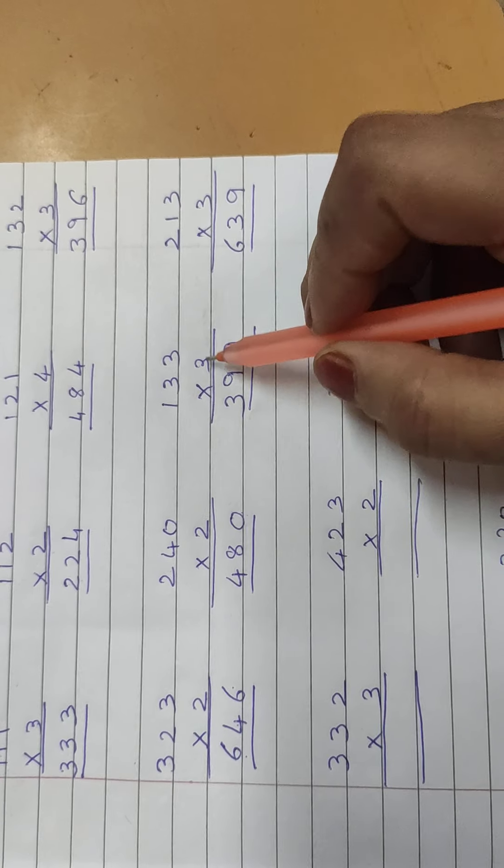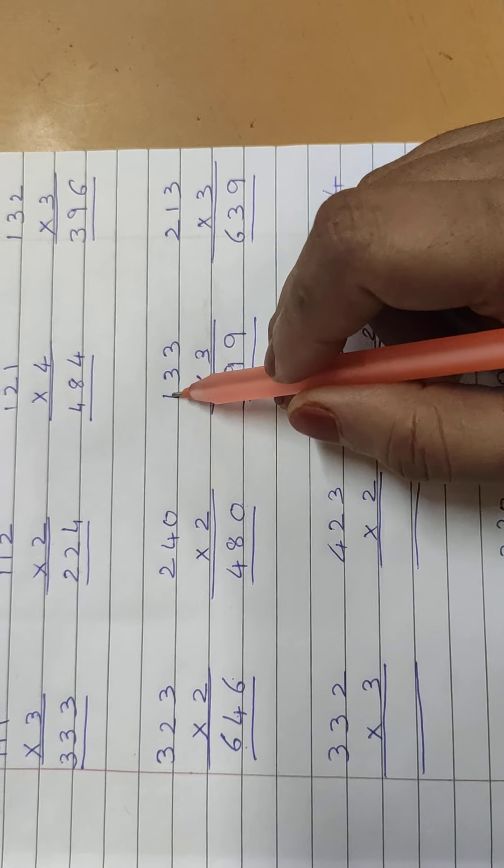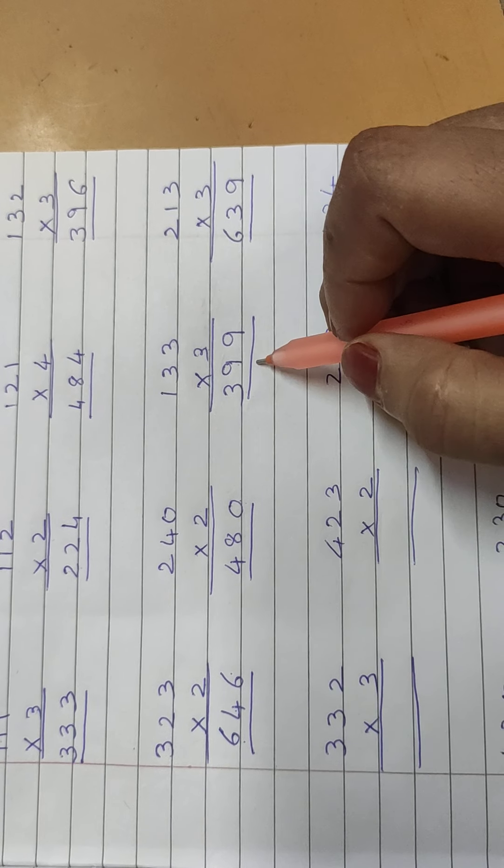133 multiply by 3. 3 threes are 9, 3 threes are 9, 3 ones are 3. 399.